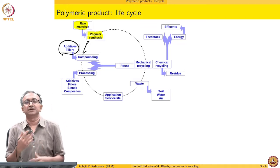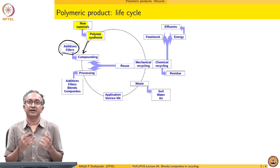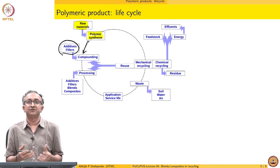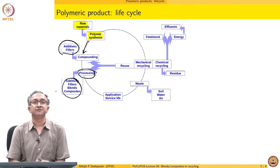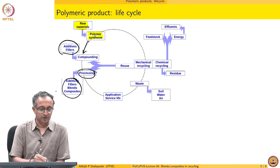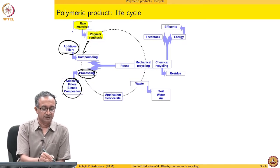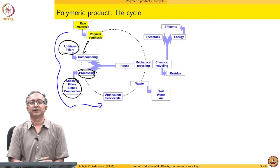Compounding is an operation or a set of operations in which we get a polymer in a granule or a fiber or any form which can then be processed by a fabricator who is interested in using the plastic or polymeric product for a specific application. Post compounding, it goes to processing where we may again add different additives and fillers to use the polymer by itself or with blends and composites.